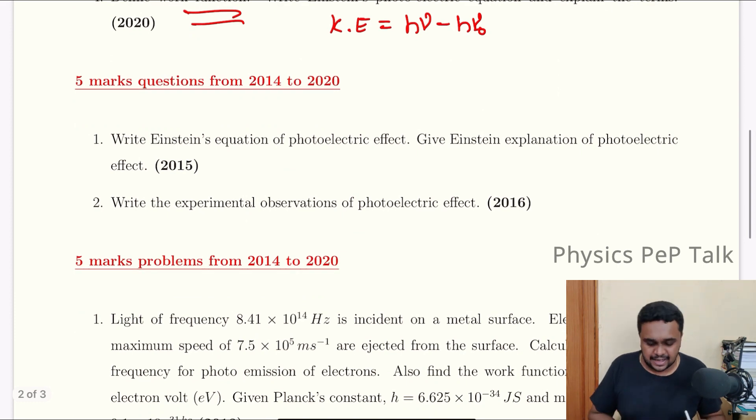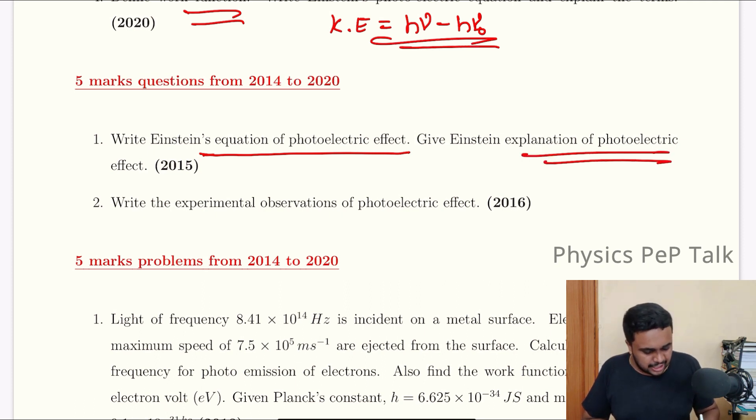For 5 marks: Write Einstein's equation of photoelectric effect, write the equation. Give explanation of photoelectric effect - the experimental observations. Write that and you'll get full marks.